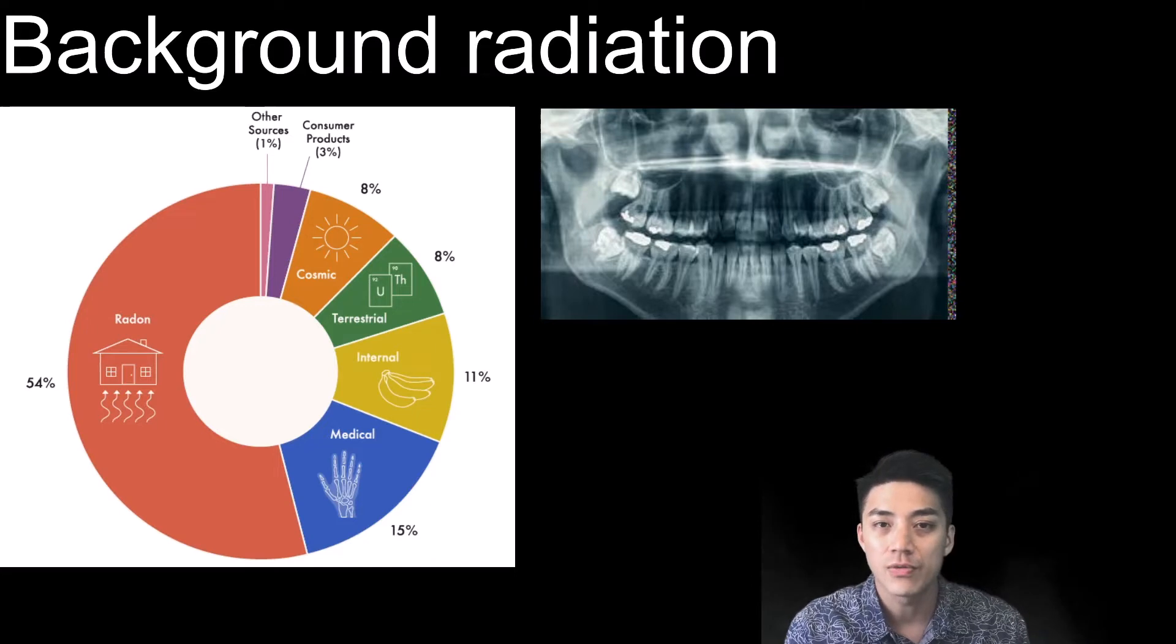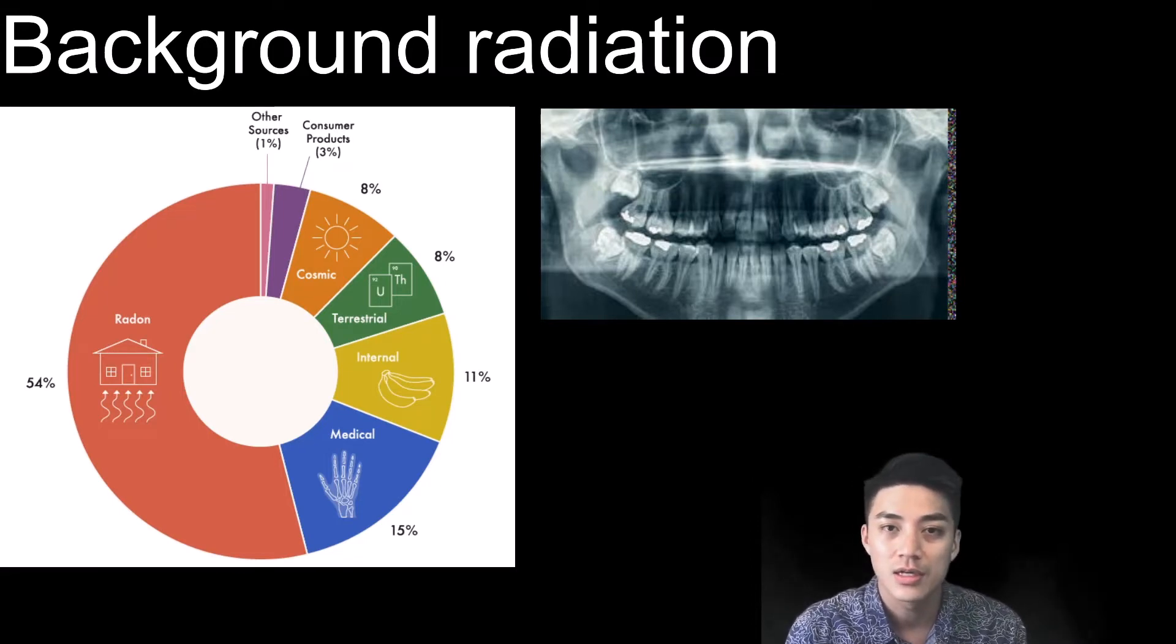The truth is, you're exposed to background radiation pretty much anywhere you go on planet Earth. It's found in the air, the soil, the trees, foods that you eat, getting a dental x-ray. In fact, 54% of the annual dose of radiation that you receive comes from radon gas that seeps up from the ground.